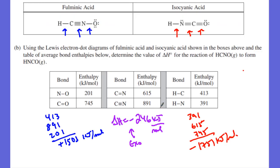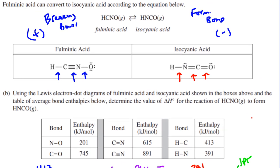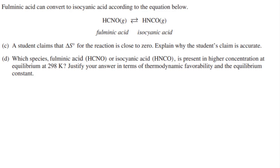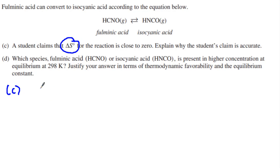That was part B. For scoring: one point for getting the correct sign — making sure it's negative — and one point for the final answer. One point for getting your bond energies on either side and one point for your final answer. Then we go to a delta S problem. Delta S is entropy, or arrangement of particles.